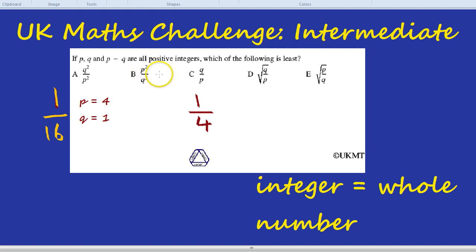How about P squared over Q squared? Well, P squared would be 4 squared, which is 16. So it would be 16 over Q squared, which is 1 squared. So that's 1. So far, we've seen Q squared over P squared is 1 over 16. P squared over Q squared would be 16 over 1. And Q over P is 1 over 4.